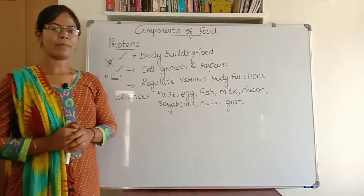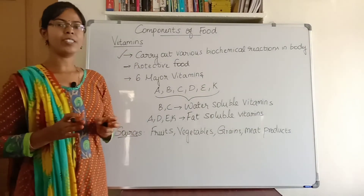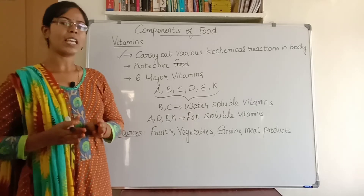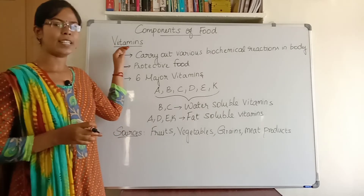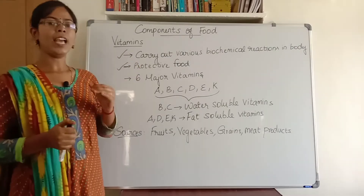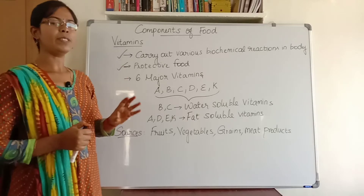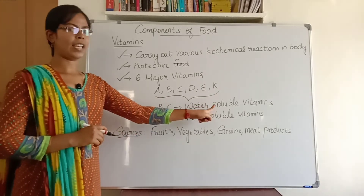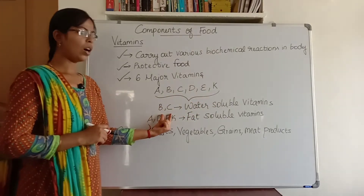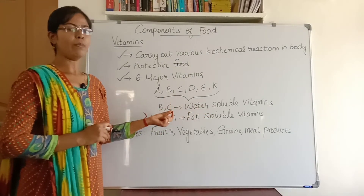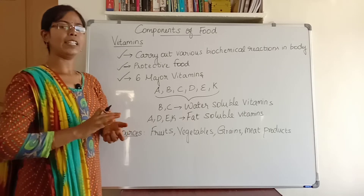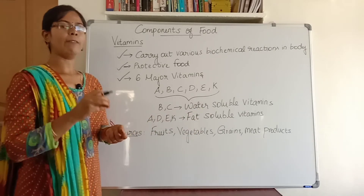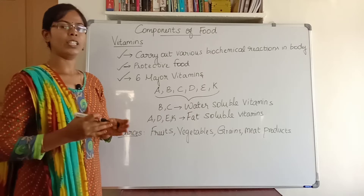Now let us see about vitamins. Vitamins help to carry out various biochemical reactions in our body. There are a lot of chemical reactions that take place in our body, and for these chemical reactions to occur, vitamins are very necessary. Vitamins also act as a protective food — they help to build resistance to many diseases. There are six major vitamins: A, B, C, D, E, and K. Vitamins B and C are water-soluble vitamins, meaning they dissolve in water. Vitamins A, D, E, and K are fat-soluble vitamins, meaning they dissolve in fat.